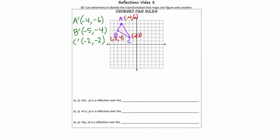What I like to do now is plot these three points: A prime, B prime, and C prime. A prime is going to be at negative 4, negative 6. B prime is at negative 5, negative 4, and C prime is at negative 2, negative 2. Now, if you're changing the sign of Y, what type of reflection was this? Did it reflect over the line Y equals X? Did it reflect over the Y axis? Or did it reflect over the X axis? I'll leave that to you.